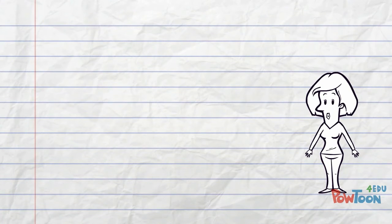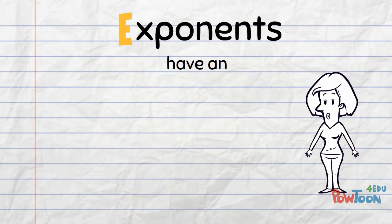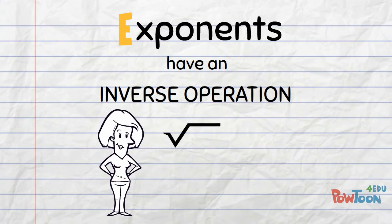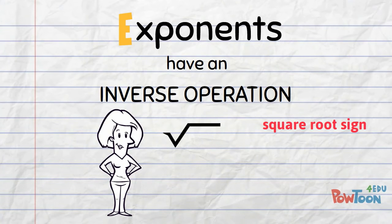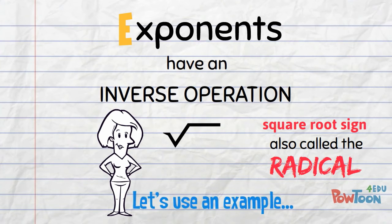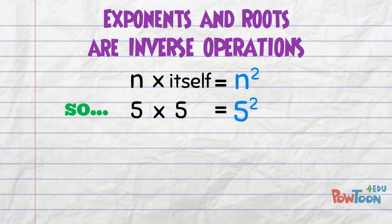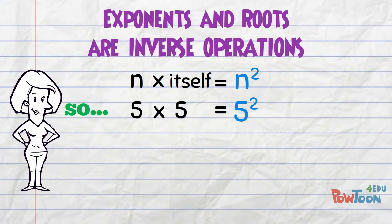Did you know that exponents also have an inverse operation? This is it! You probably know this as the square root sign. It's also called the radical. Let's use an example to understand why exponents and radicals or roots are inverse operations. We can say a number times itself is a number squared. So 5 times 5 is 5 squared. Of course, that's 25.